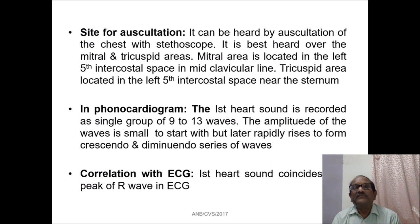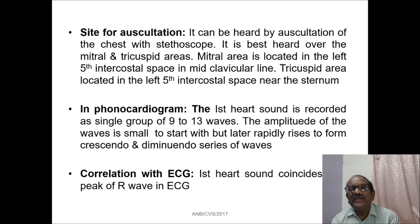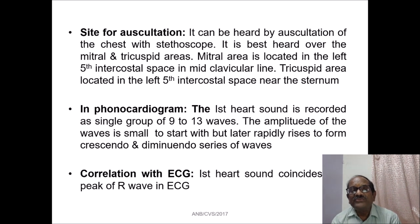Now, which is the site for auscultation? It can be heard by auscultation of the chest with a stethoscope. It is best heard over the mitral and tricuspid areas. The mitral area is located in the left fifth intercostal space in the mid-clavicular line, and the tricuspid area is located in the left fifth intercostal space near the sternum. Now, regarding its appearance in the phonocardiogram — try to correlate this event with Wigger's diagram, which we have studied. In Wigger's diagram, heart sounds were represented as the fifth row in the figure, with the last row being the recording of heart sounds.